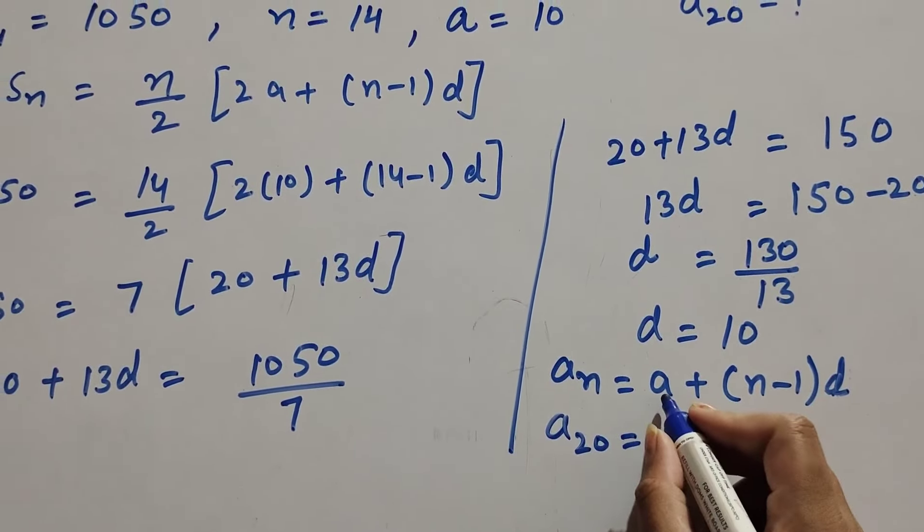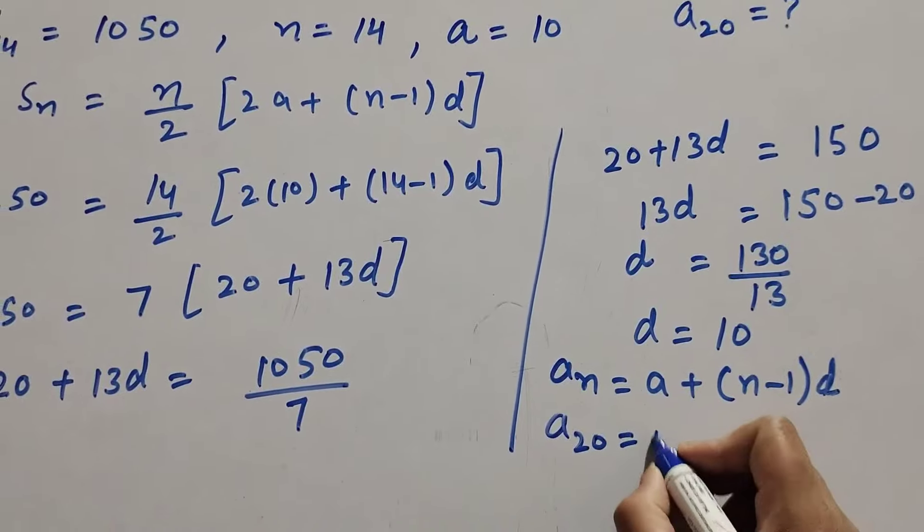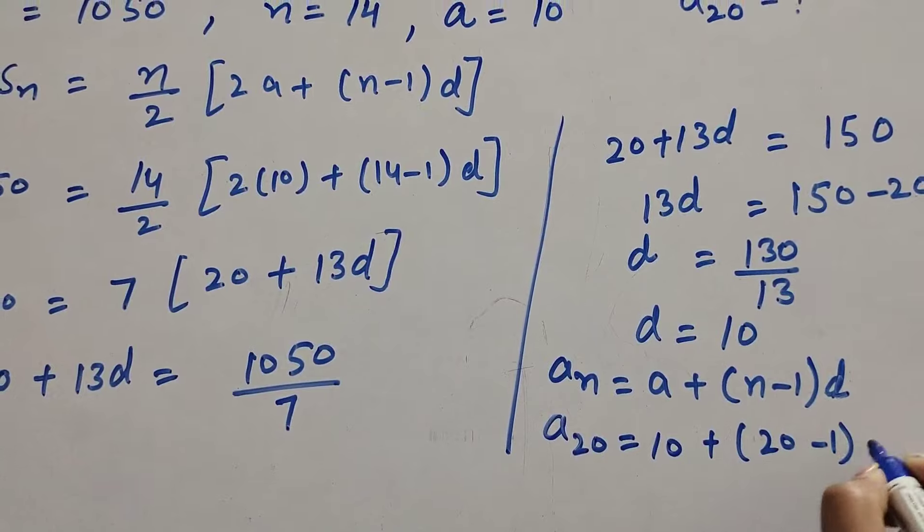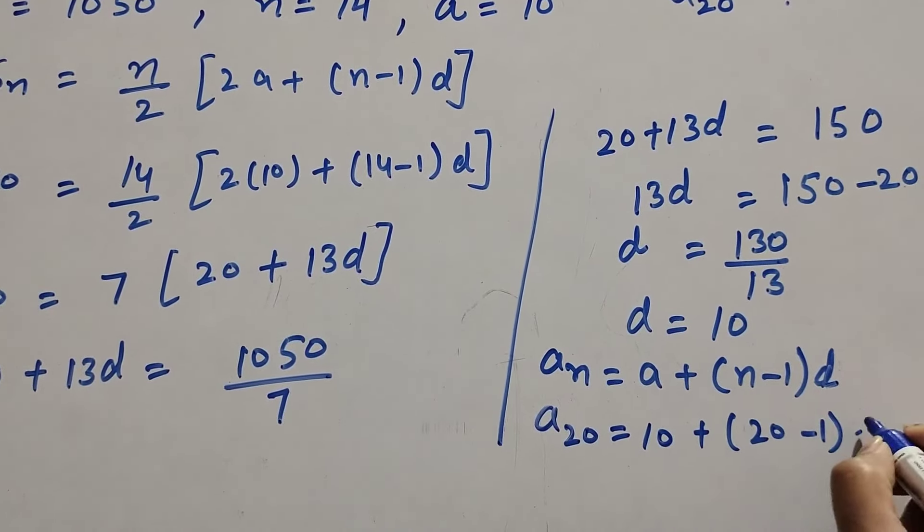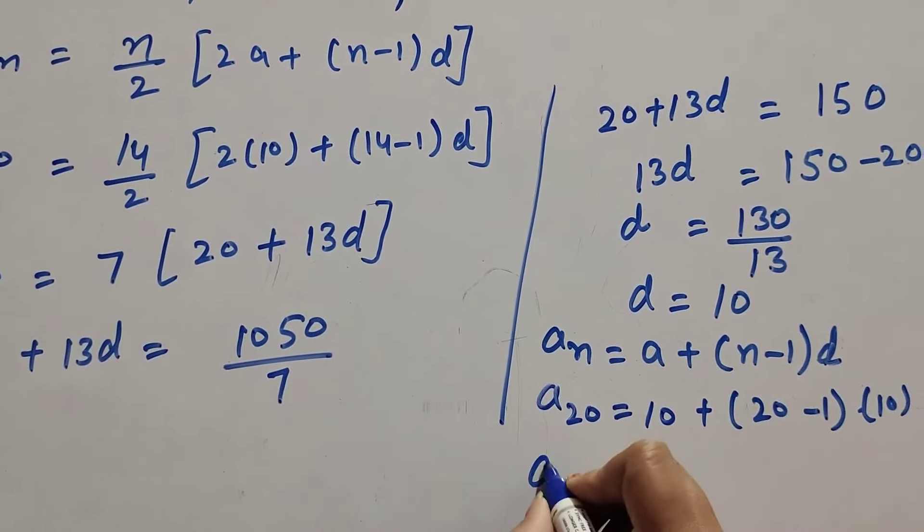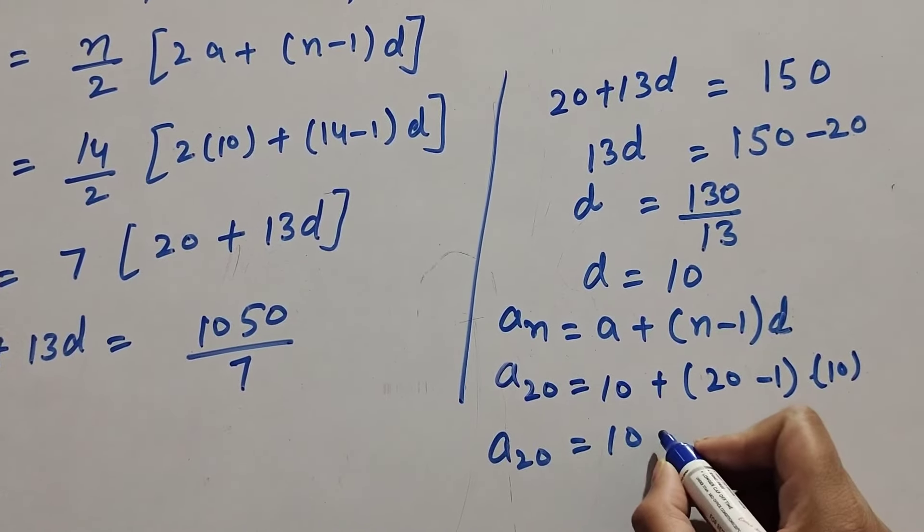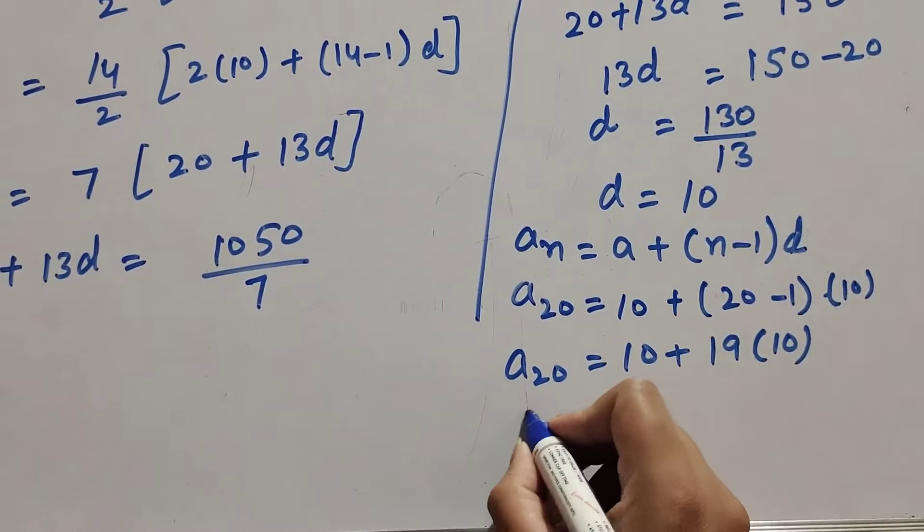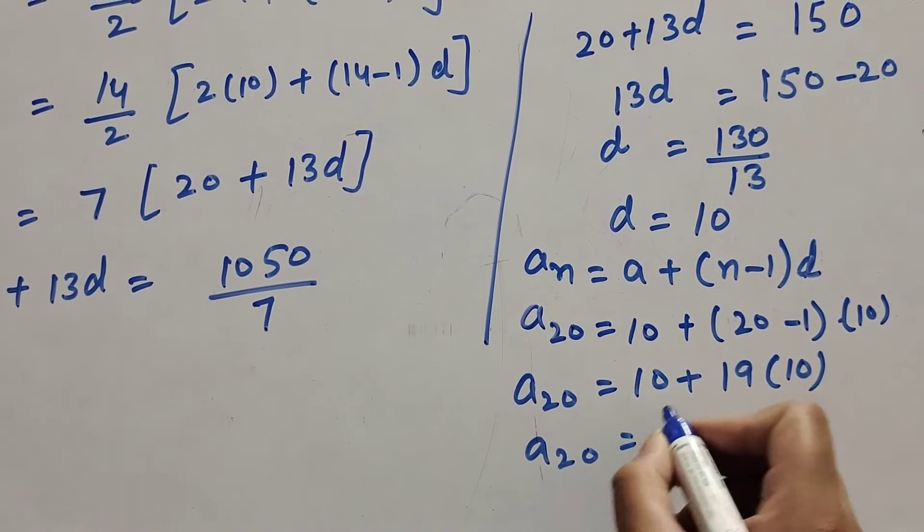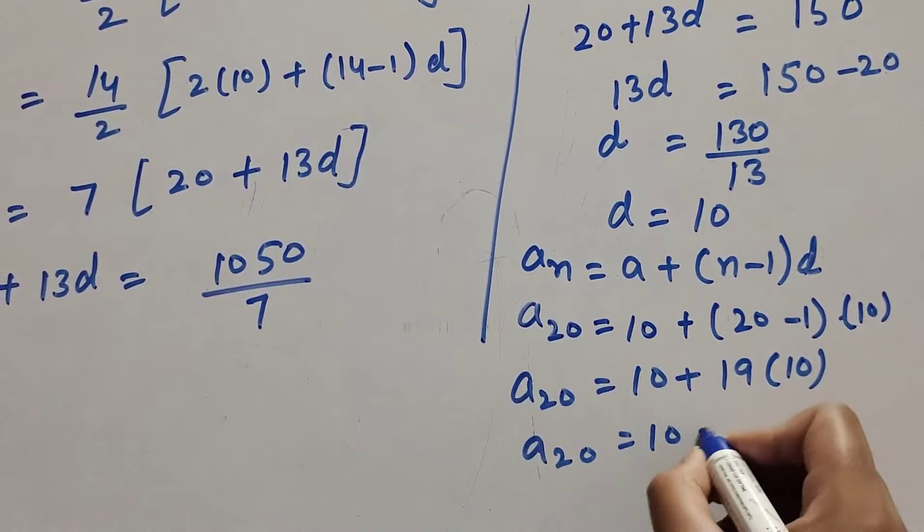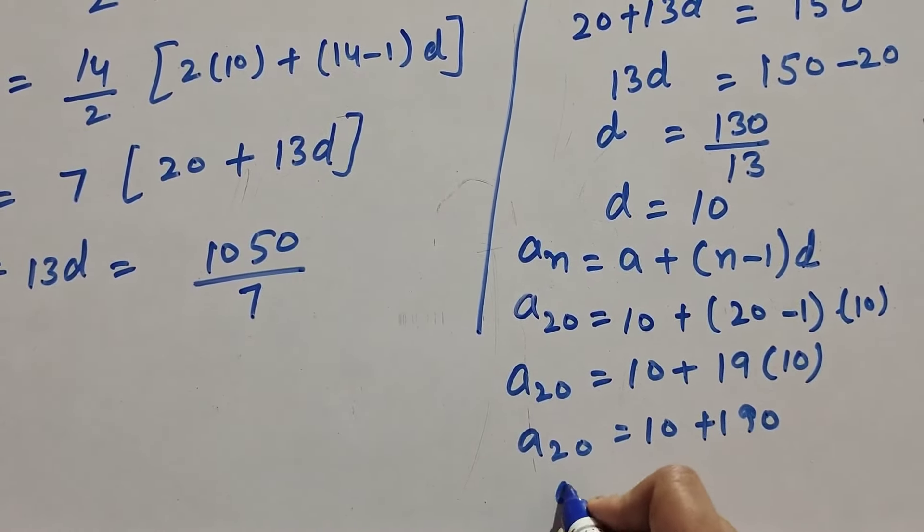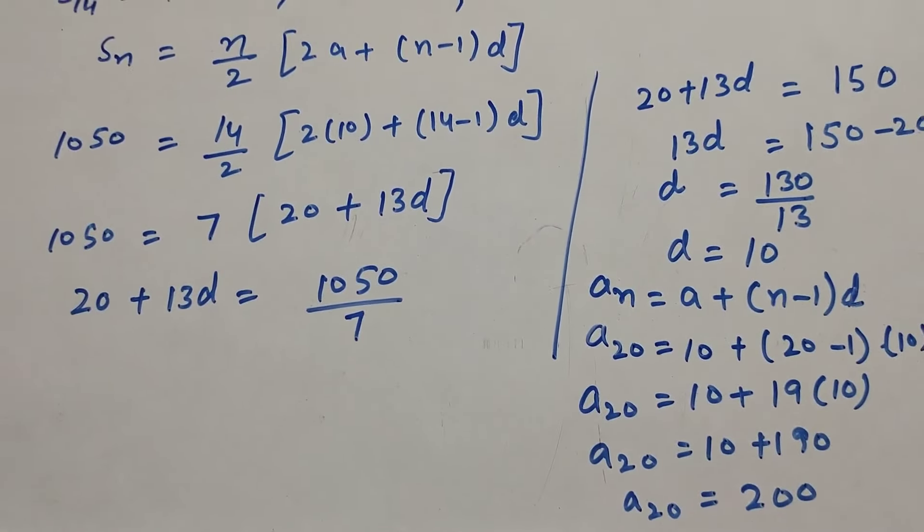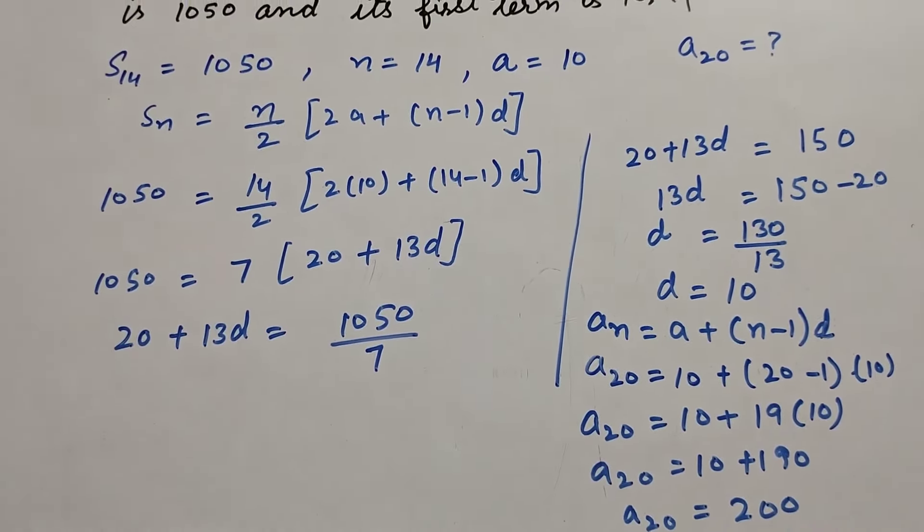So a_20 equals 10 plus (20-1)(10). 20 minus 1 is 19, into 10. A_20 equals 10 plus 190. And a_20, 20th term of AP, equals 200.